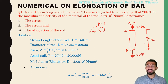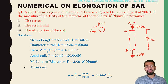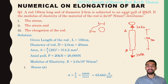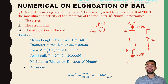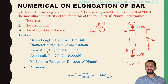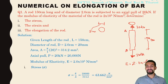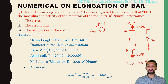Now, before going to the solution, what else is given? The modulus of elasticity — that is Young's modulus, the value of E — is given directly as 2×10⁵ Newton per mm². Whatever value they have given is direct for us in this representation.